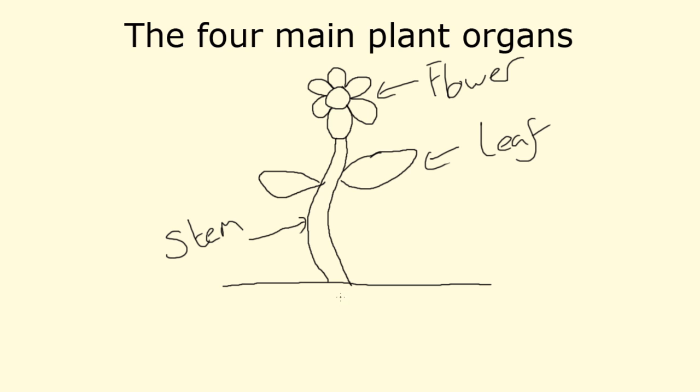The last plant organ are the roots. The roots basically go into the ground and what they do is provide some anchorage so the plant doesn't blow away or fall over. They also provide a very large surface area to take in plant minerals and water from the soil, which are needed for photosynthesis and nutrition.